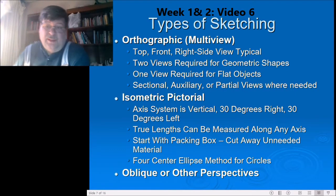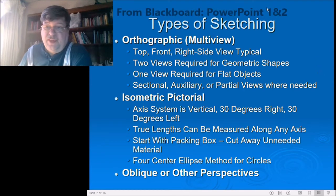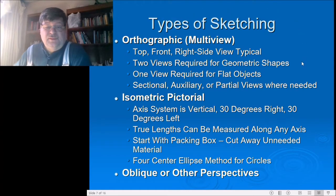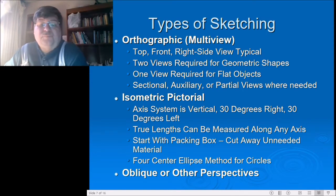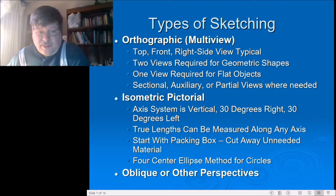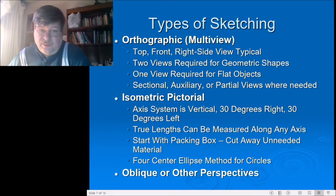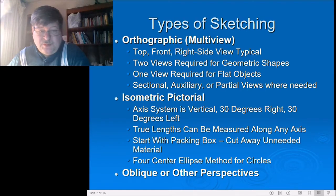Coming back to the PowerPoint, we have types of sketching — either orthographic or isometric views. We'll start with orthographic views. As it says here, top, front, right side view is typical. If you need more views to correctly dimension the part, you'd use more views. Two views are required for simple geometric shapes — cylinders, cones, boxes — that's all you need; a third view doesn't give you any more information.